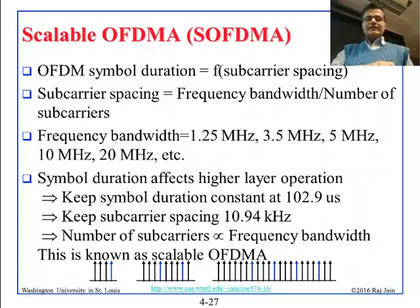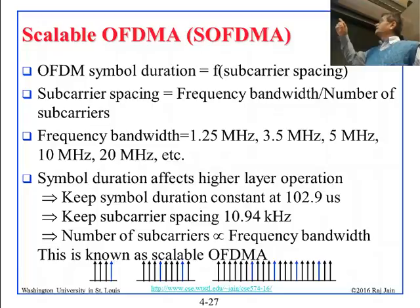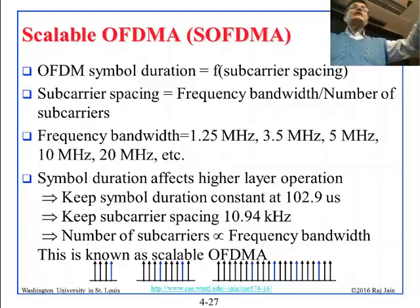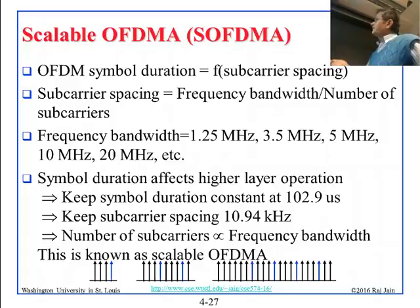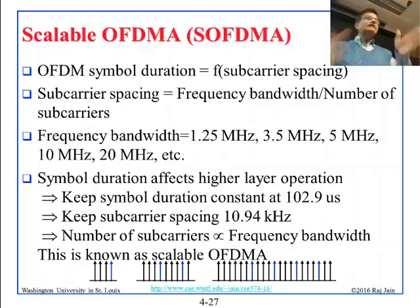If you have a certain band and divide it into 1000 subcarriers, that gives you the spacing. Frequency bandwidth options can be 1.2, 3.5, 5, 10, or 20 MHz depending on the country. One approach is to keep symbol duration constant regardless of bandwidth — using 102.9 microseconds, which corresponds to a spacing of 10.94 kHz. Then, if you have 1.25 MHz you get roughly 128 carriers; twice the bandwidth gives twice the carriers. The inter-carrier spacing stays fixed.